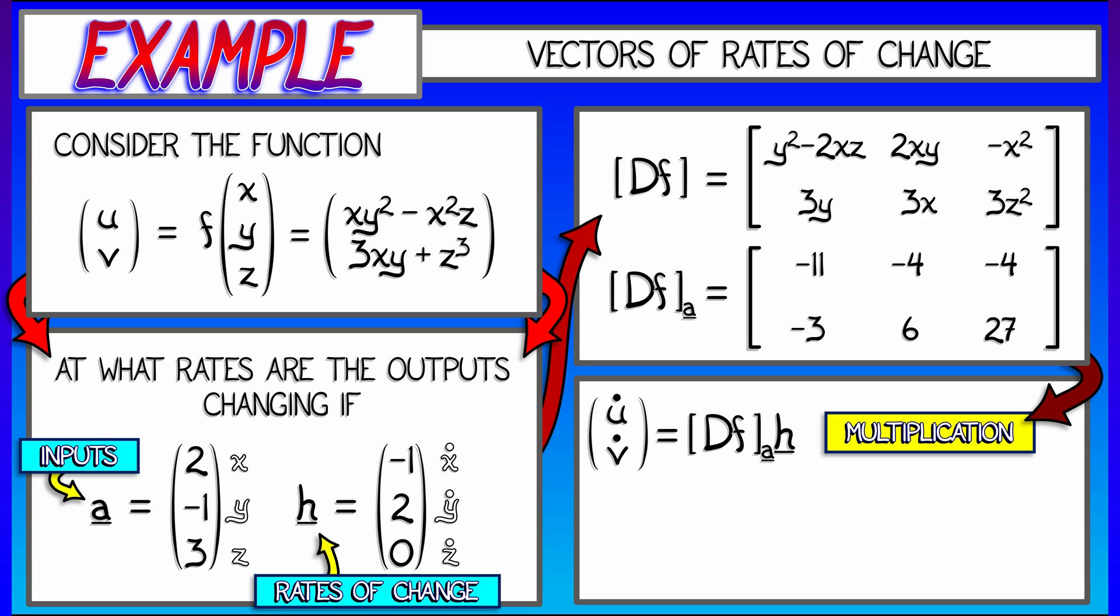I take this derivative matrix, negative 11, negative 4, negative 4, negative 3, 6, 27, multiply it by that vector, negative 1, 2, 0, and I get the vector 3, 15. That tells me the rates of change of the outputs u and v at this point.